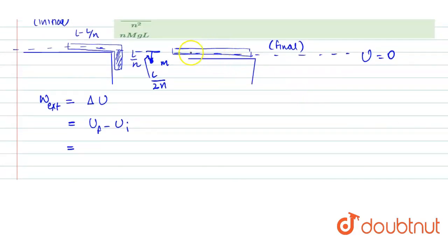Correct. So let's try to find out the value of U final minus U initial. Finally, the whole chain is on the table, so the final potential energy is zero. Initially, the m part is below the datum point, so its potential energy will be negative. So minus m into g into height, which is L by 2n, becomes positive m g L by 2n.